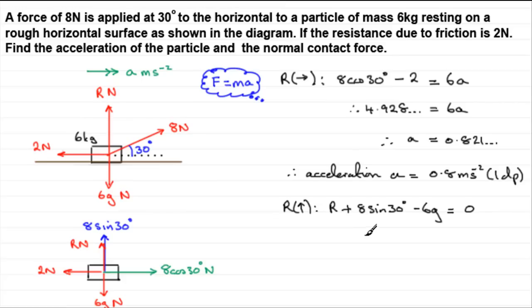And if you rearrange this to make R the subject, you're going to find that you get R equals 6g minus 8 sin 30 degrees. And if you work that out in your calculator, you'll get that the normal force, let's just write this in, the normal contact force, that's what we're asked to find, R equals. So work that out in your calculator, and you'll get 54.8. Don't forget the units, Newtons. And I've rounded this up to 1dp. One decimal place. So put 1dp in there.